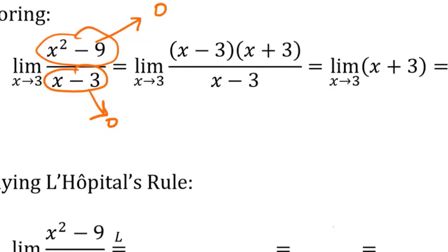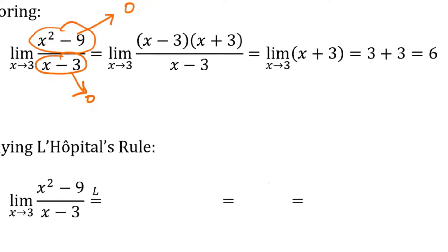And then the x minus 3 is canceled. So we get the limit as x approaches 3 of just x plus 3. Now we can plug in because we no longer have an indeterminate form. So we plug in the 3 and we get 3 plus 3, which is equal to 6.